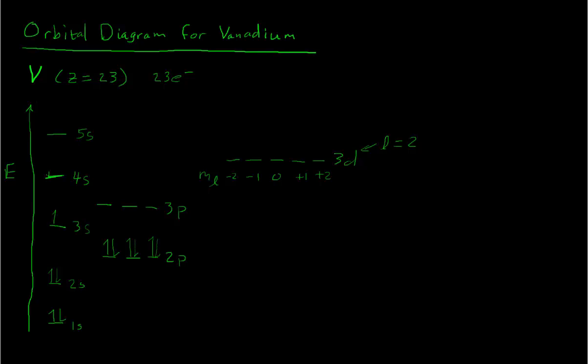Then we follow the Aufbau principle and move up to the next box. And we keep on doing this, following the Pauli principle, the Aufbau principle, and Hund's rules for each one of these electrons until we have all of these boxes filled. And we've gotten to 23 electrons.